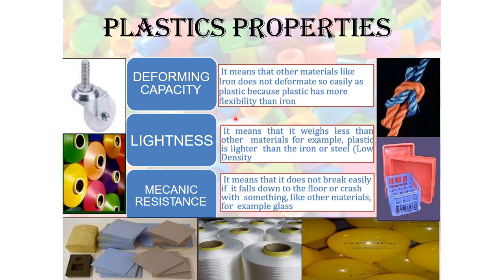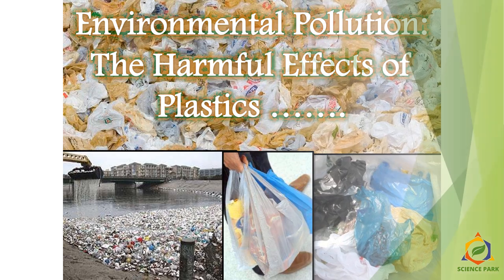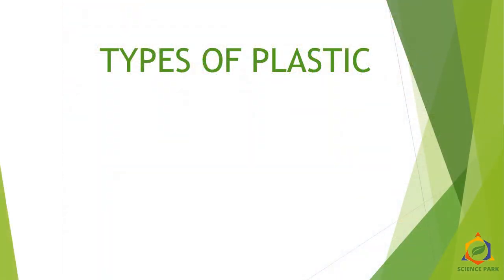Now let's see different properties of plastic. First is deforming capacity — other materials like iron do not lose their shape as easily as plastic does, because plastic has more flexibility than metals like iron, aluminium, or copper. Second is lightness — plastic weighs less than iron, steel, or any other metal. Third is mechanical resistance — it doesn't break easily even if dropped on the floor or crashed, unlike glass. There are also environmental pollution issues and harmful effects of plastics.